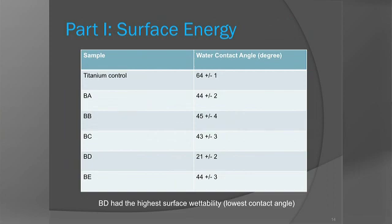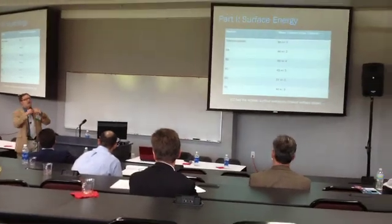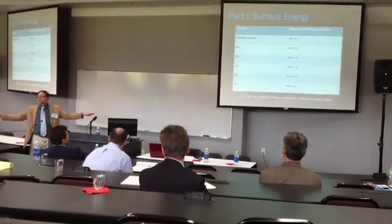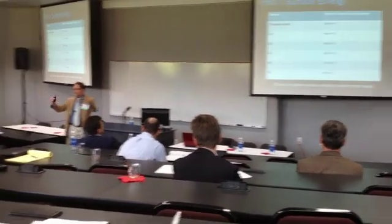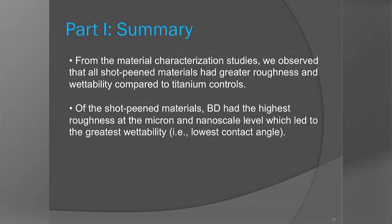We also looked at surface energy and saw the same trend. Compared to titanium, every process involving shot peening had increased surface energy, so the contact angles were lower. For those who don't do this — you put drops of liquid on surfaces and measure their angle. The lower the angle, the more the drop spreads on the surface, so the more hydrophilic it is. The angles were all lower compared to the titanium control, and again the BD combination material was the most hydrophilic. Part 1 summary: we were able to increase roughness and energy using shot peening, and the combination approach was the best.